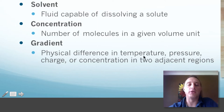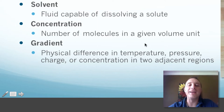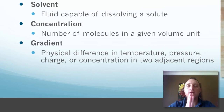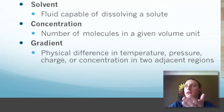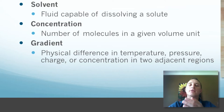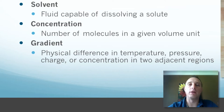Concentration, very simply, is how much stuff — how much solute is found in the solution. And gradient refers to a difference, usually in concentration, but it can be anything: temperature, pressure, charge. It's basically any kind of difference between two areas. Together, we talk a lot about the concentration gradient when we discuss cellular transport.